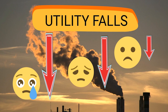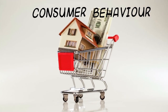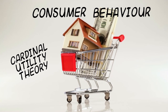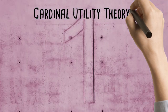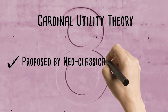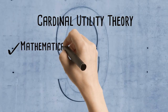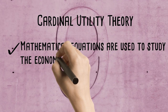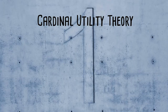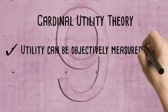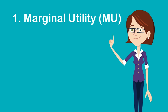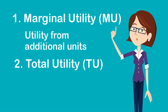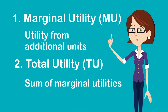Economists have studied consumer behavior extensively and proposed a couple of utility theories. Two very popular utility theories are the Cardinal Utility Theory and the Ordinal Utility Theory. The Cardinal Utility Theory is based on cardinal numbers and was proposed by neoclassical economists, who started studying the concept of consumer behavior and the economy by using mathematical equations. According to them, the satisfaction of consumers can be measured numerically and is additive. This theory recognizes two types of utility: marginal utility and total utility. Marginal utility is the utility derived from an additional unit, and total utility is the sum of marginal utilities.